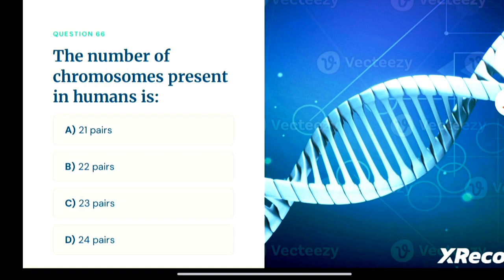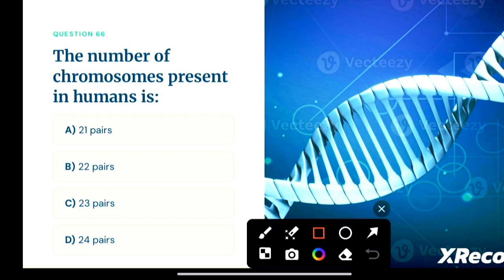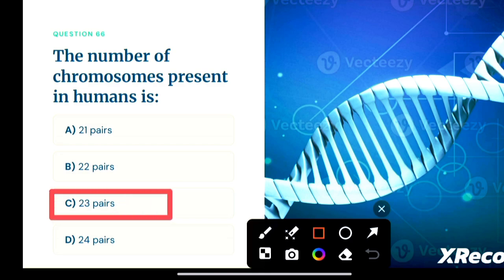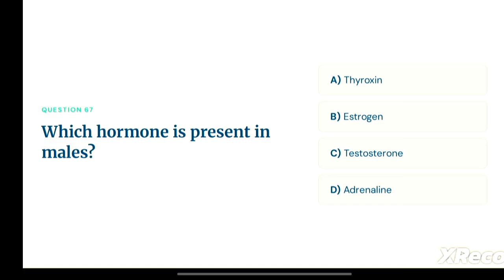The first question: the number of chromosomes present in humans is — option A: 21 pairs, option B: 22 pairs, option C: 23 pairs, option D: 24 pairs. The correct answer is option C, 23 pairs. Humans have 23 pairs of chromosomes.